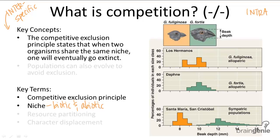We have a bit of a dilemma here because we said that competition is negative for both organism populations. And indeed, in the short run that is true — while two organism populations are in competition, a lot of individuals die. However, in the long run, because one organism population will eventually out-compete the other, it becomes a positive-negative interaction.